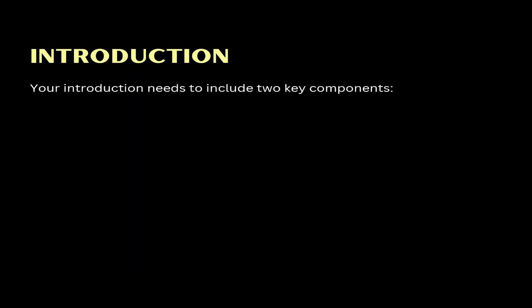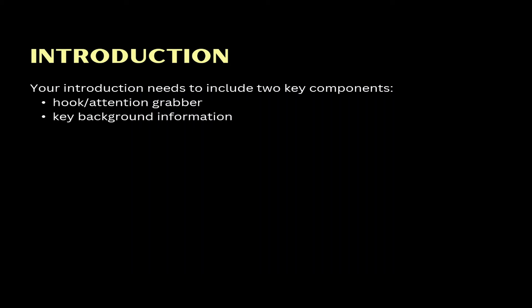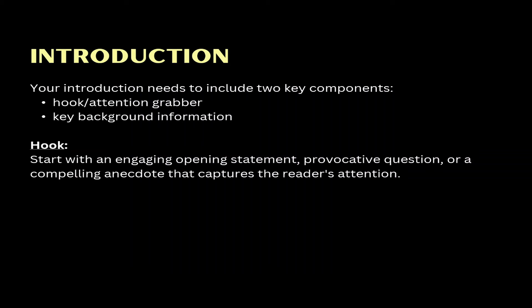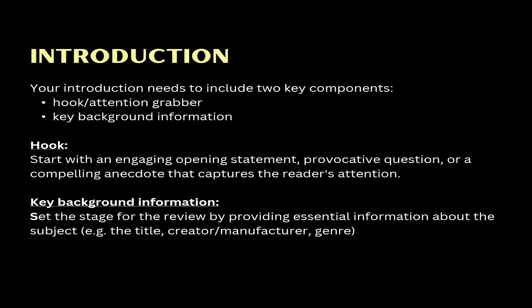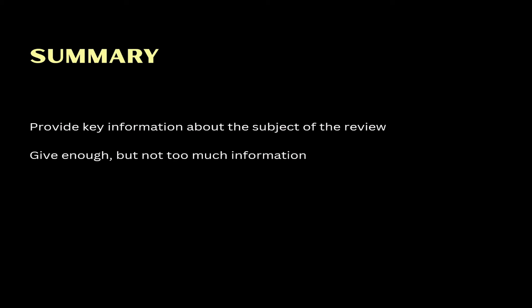After writing the title, you need to move on to your introduction. The introduction also serves the purpose of hooking the reader in and making them interested in reading the rest of the review. The introduction also needs to provide enough background information to make the reader understand the subject you are writing about. This means that your introduction needs to include two key components: a hook or attention grabber, and key background information. When writing your hook, start with an engaging opening statement, a provocative question or a compelling anecdote that captures the reader's attention. When writing key background information, set the stage for the review by providing essential information about the subject, such as the title, creator and the genre.